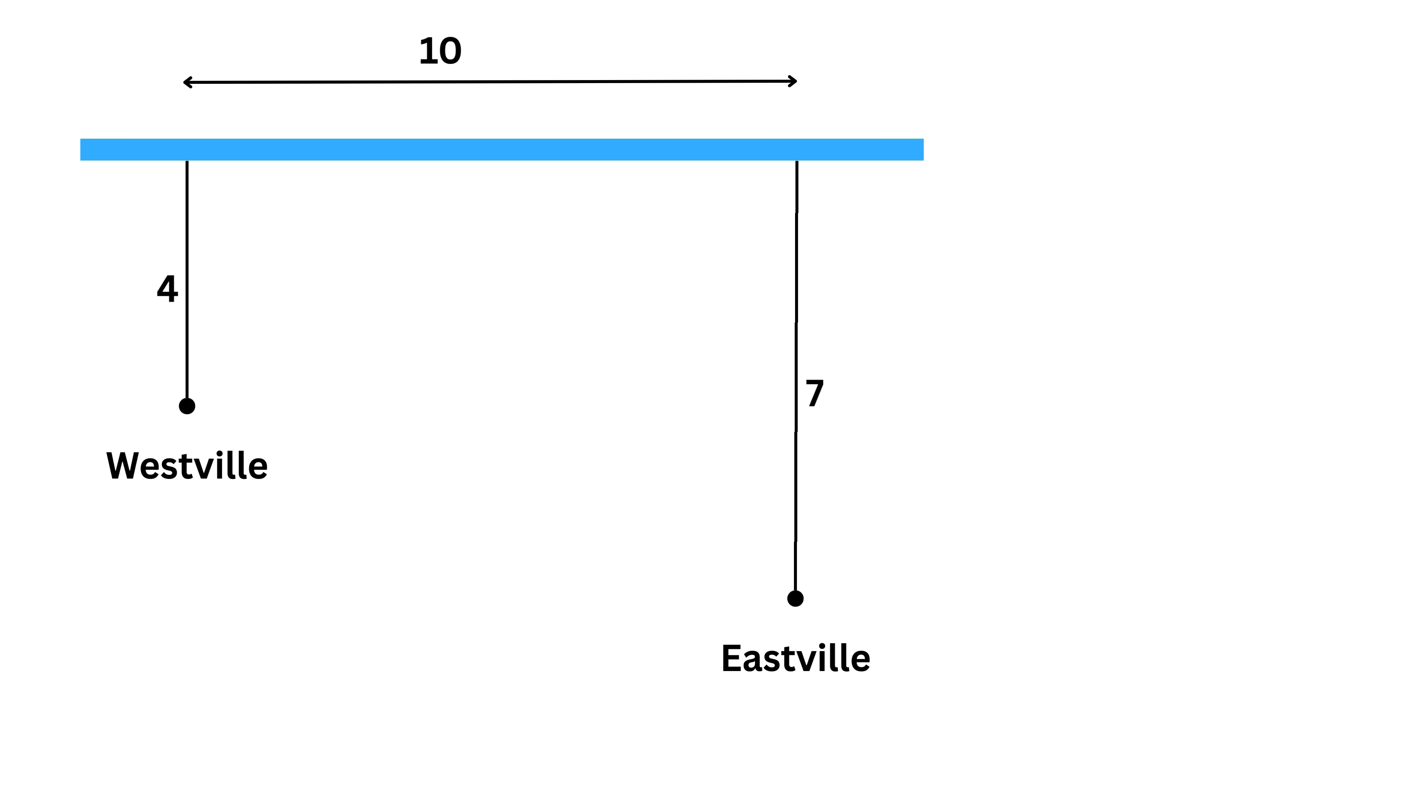Now, both towns want to share a single water station, which will be built somewhere along the river. Then they'll each lay down a straight pipe from their city to the station. Their goal is to minimize the total length of these two pipes, meaning they want the sum of both pipe lengths to be as short as possible. So the big question is, at what point along the river should the water station be built so that the total length of pipe needed is the smallest?